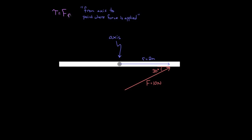Now we can solve for this torque, but you have to be careful. A mistake I might have made is to say the force was 10 Newtons and the R is two meters, so my torque should just be 20 — two times ten. But that's not right, because if you just write the formula for torque like that, what you really mean is that this force is the perpendicular force to R. So if I break this 10 Newtons into components: one component parallel to R — I'll call that F parallel — and another component perpendicular to R, I'll call that F perpendicular.